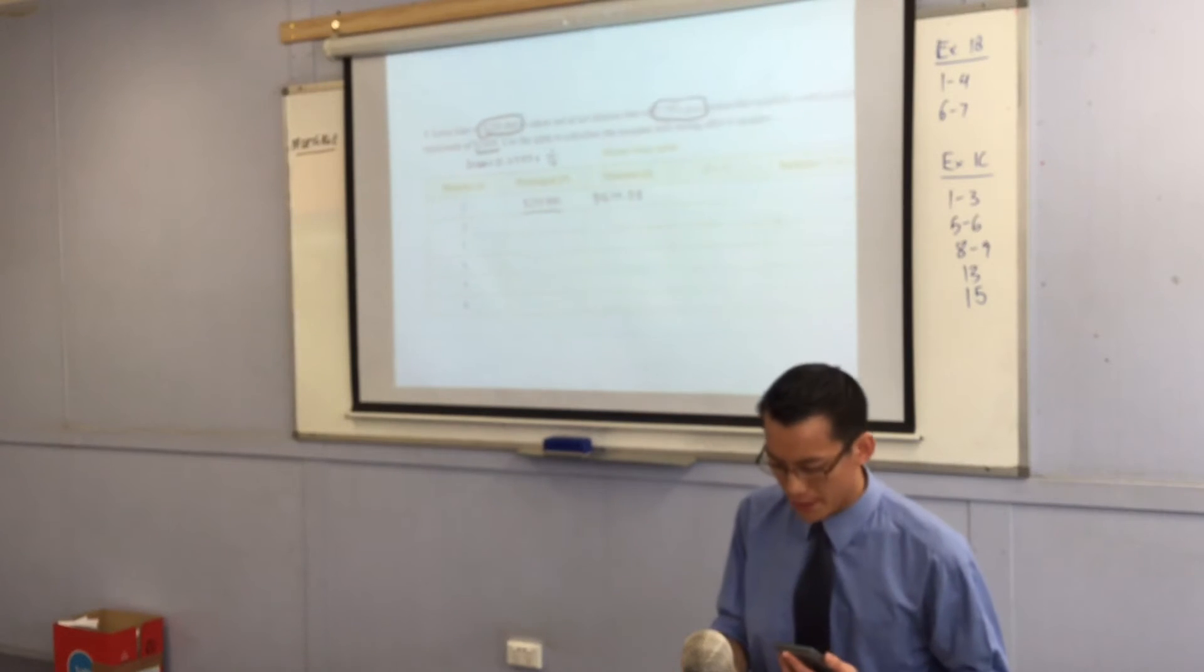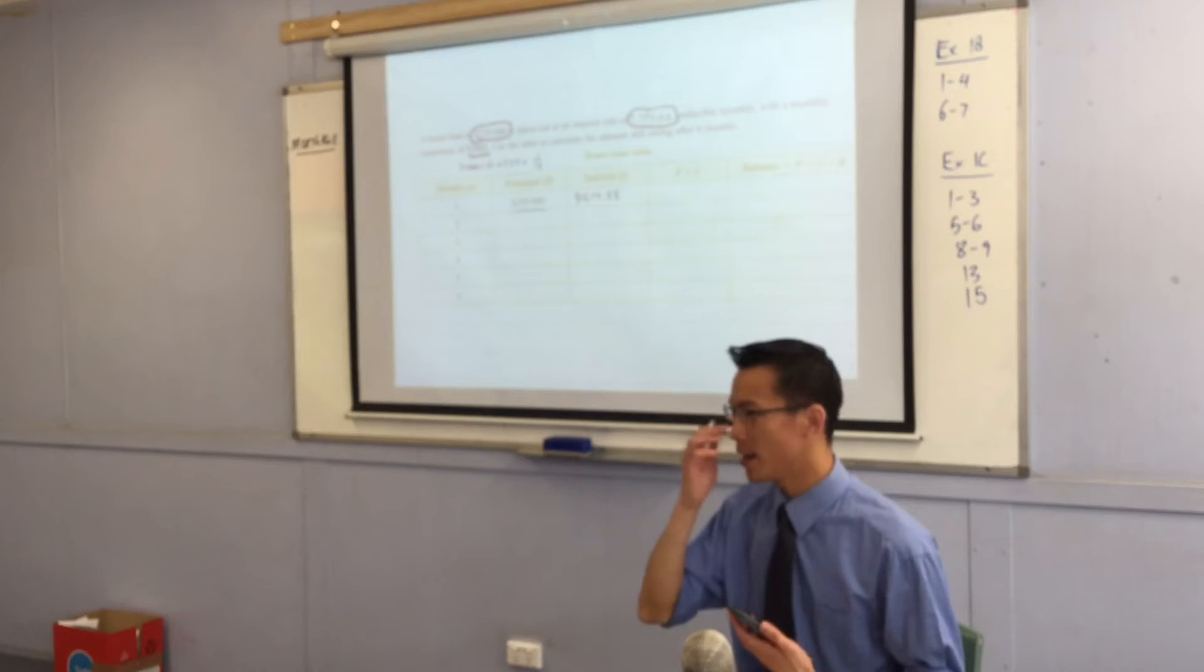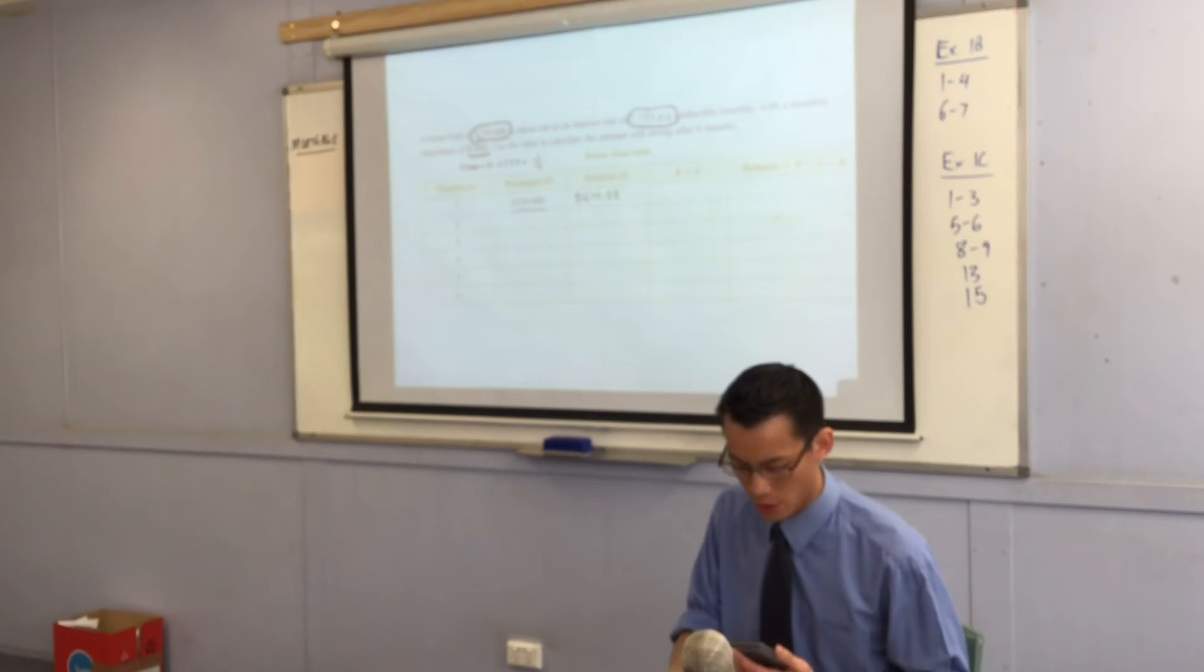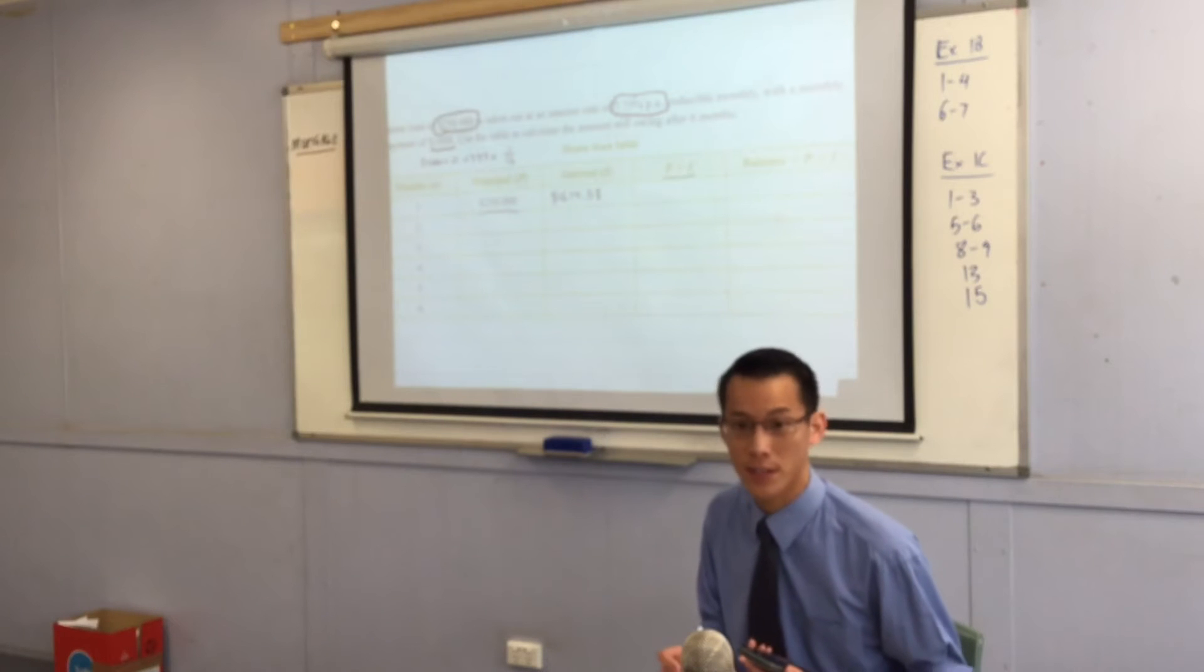So what happens is that now that that interest has been calculated, the bank is like, you owe us more now. You owe us the sum of those two things, which is why this next column says P plus I. You see that?